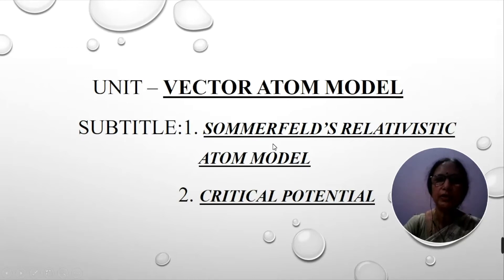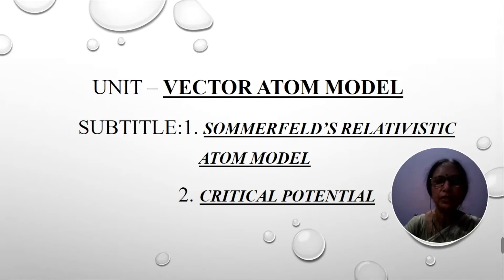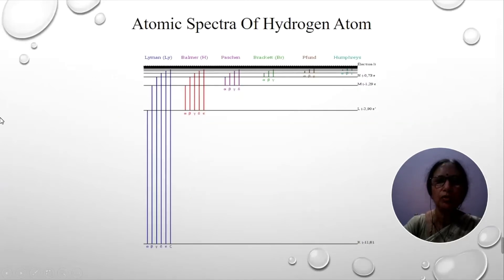Before going to this theory, I would like to recollect Bohr's theory. When we have Bohr's theory convincingly explaining the atomic model, naturally the question arises: why do we need this new theory? Bohr's has given the entire picture of the atom — he calculated the radius of the atom, the energy of the atom, and also gave the expression for the wave number and wavelength or frequency of the spectral line. He also explained the atomic spectra of the hydrogen atom.